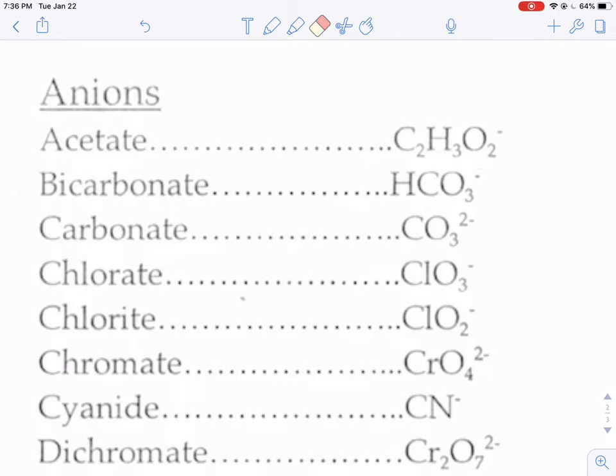That acetate, for example, is two carbons, three hydrogens, two oxygens, and then that minus up there tells you that it's a negative one charge. That whole group has a negative one charge. Or chromate down here is one chromium, four oxygens, and the combination of all those put together has a negative two charge. If you notice the endings here: ATE, ATE, ATE, ATE, ATE, right? All of these guys, for the most part, have endings of ATE or ITE.